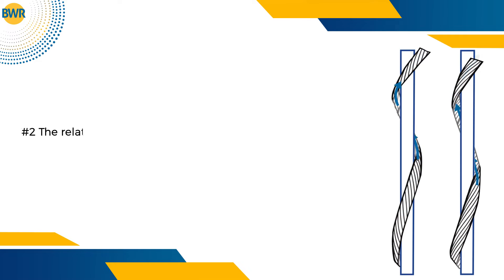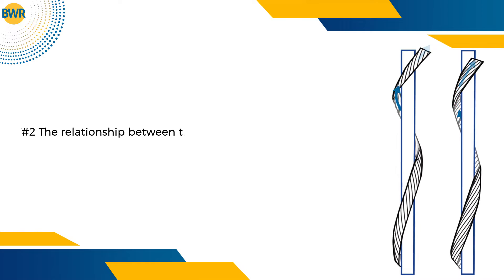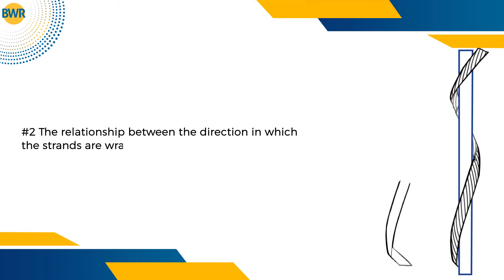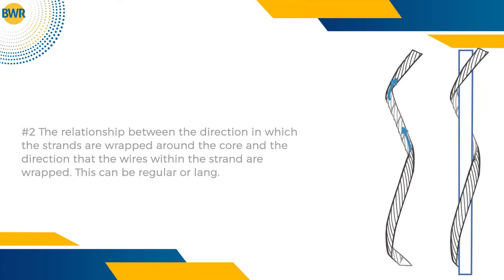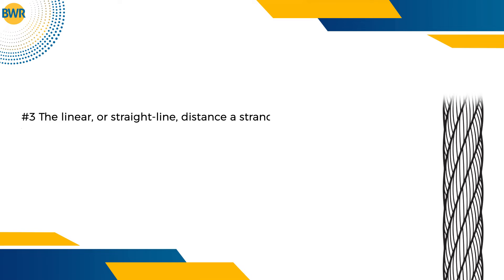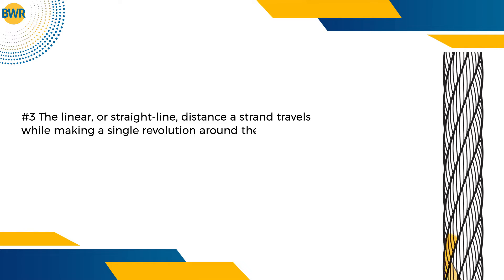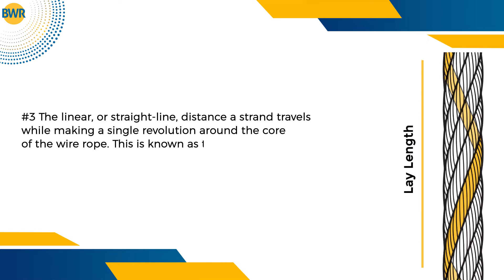Second, the relationship between the direction in which the strands are wrapped around the core and the direction that the wires within the strand are wrapped. This can be regular or lang. Third, the linear or straight line distance a strand travels while making a single revolution around the core of the wire rope. This is known as the lay length.